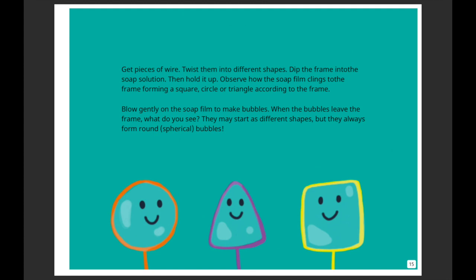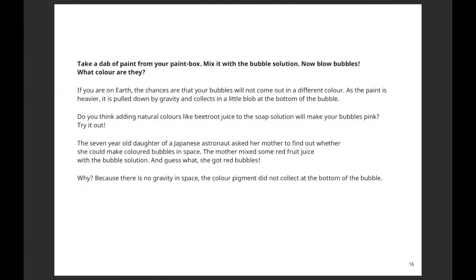Hold the frame up and notice how the soap film clings to it, forming a square, circle, or triangle according to the shape you made. Then try blowing gently on the soap film to make bubbles. When the bubble leaves the frame, what will you see? They may start as different shapes but they will always form round bubbles!